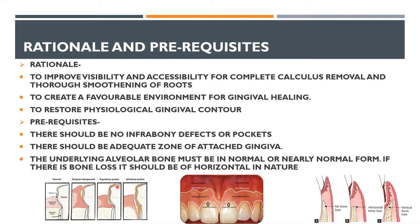The prerequisites for gingivectomy are: there should be no infrabony pockets or infrabony defects — gingivectomy is contraindicated if infrabony pockets are present. There should be an adequate zone of attached gingiva. The underlying bone must be normal or nearly normal, and if there is bone loss, it should be horizontal in nature, not vertical or angular.